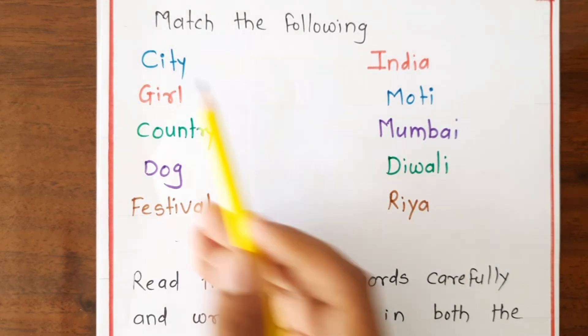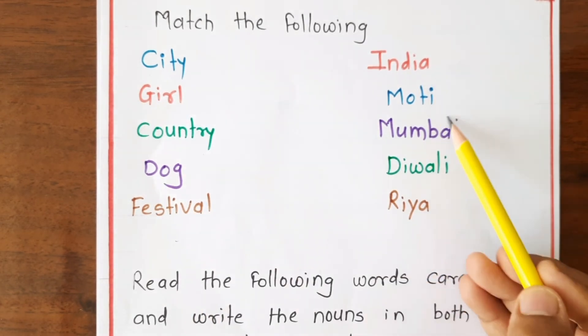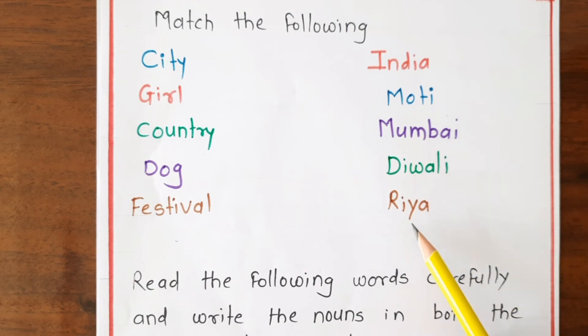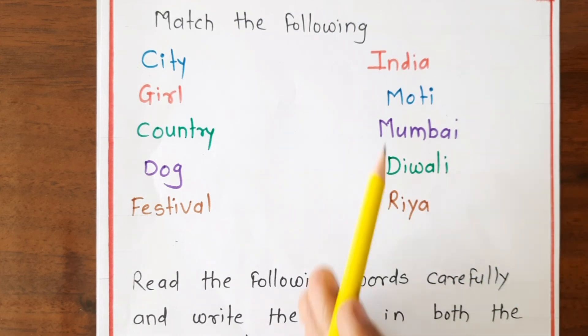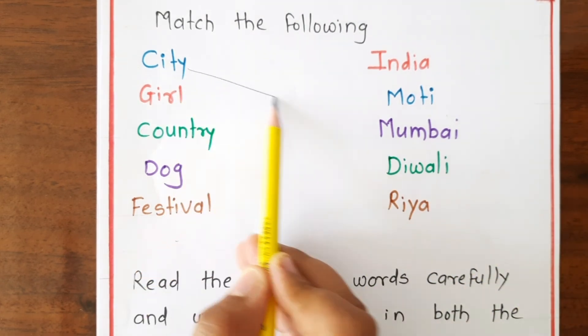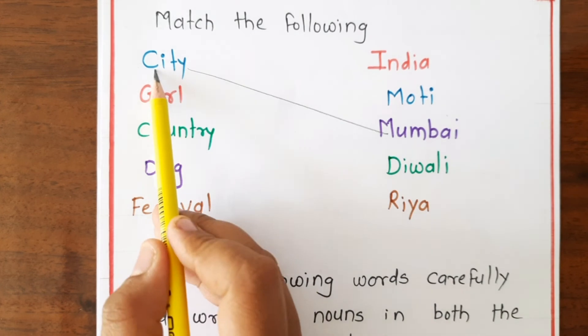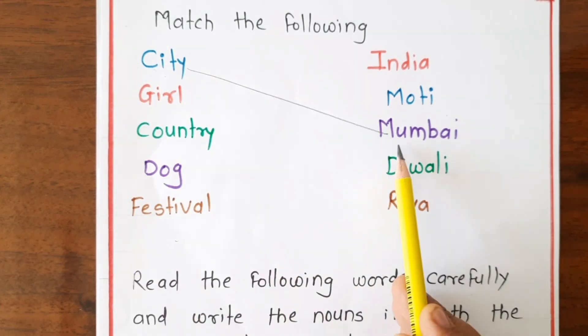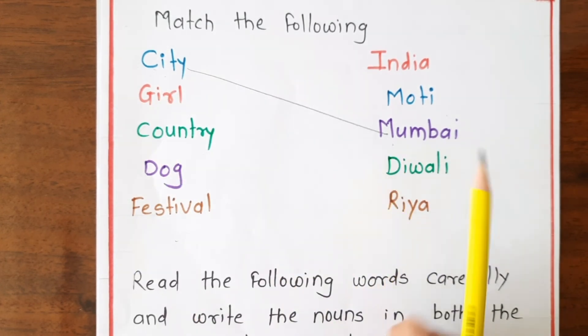First, match: city. The options are India, Moti, Mumbai, Diwali, Riya. Which city is called by a specific name? Mumbai. So 'city' is the common noun and 'Mumbai' is the proper noun.